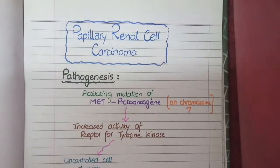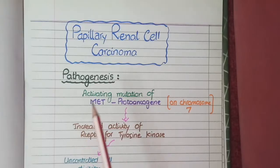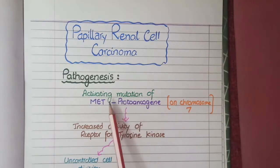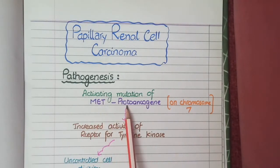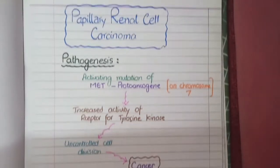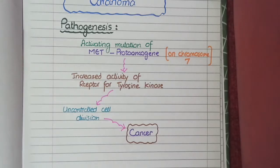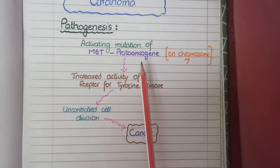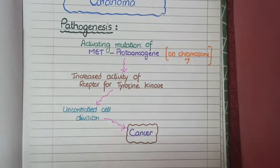Papillary renal cell carcinomas are caused by activating mutations in the MET proto-oncogene on chromosome number 7. This MET proto-oncogene encodes for receptor tyrosine kinase, so when there is an activating mutation, there will be increased activity of receptor tyrosine kinase causing uncontrolled cell division and cancer. The key point is that in papillary carcinomas, the mutation is in the MET proto-oncogene on chromosome number 7.